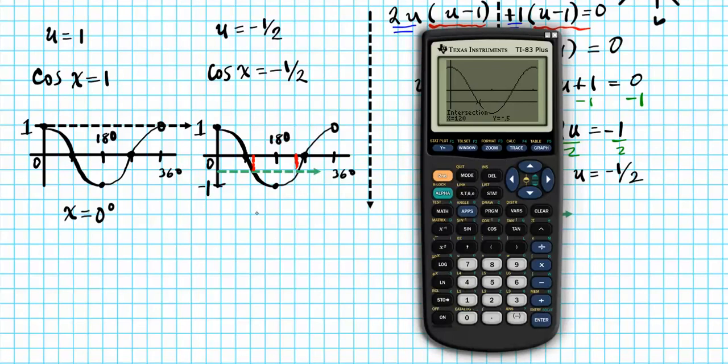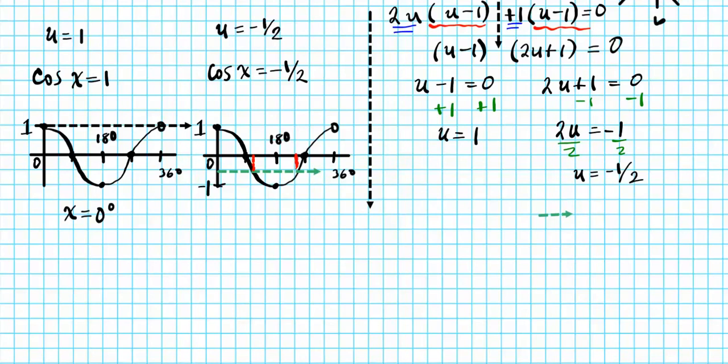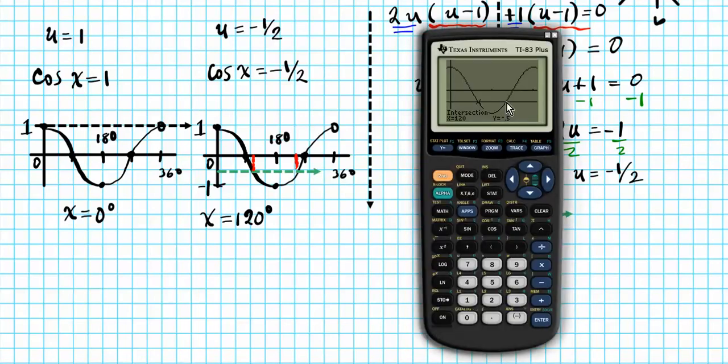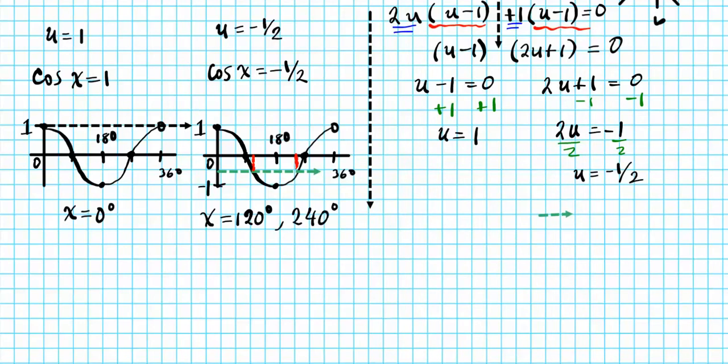We have another answer, right? This is another intersection right here. So let's go ahead and calculate that. Intersect five, first curve, press enter, second curve, press enter. Guess, move your cursor to somewhere near the point of intersection. Enter. And your final answer is 240 degrees. So that's 240 degrees. So that goes our solution set. So the values of x that satisfy the original equation are 0 degrees, 120 degrees, and 240 degrees.